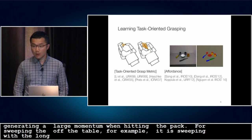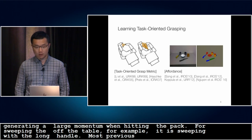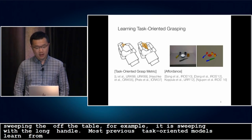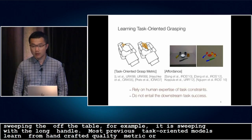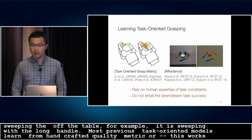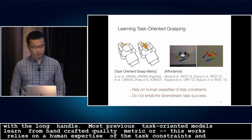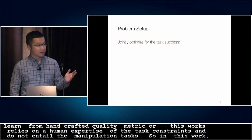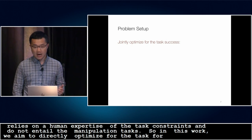Most previous task-oriented grasping models either learn from a hand-crafted quality metric or affordance labels annotated by humans. This work relies on human expertise of the task constraints, and they do not entail the success of the downstream manipulation tasks. In this work, we aim to directly optimize for task success by jointly choosing a task-oriented grasp and its subsequent manipulation actions.